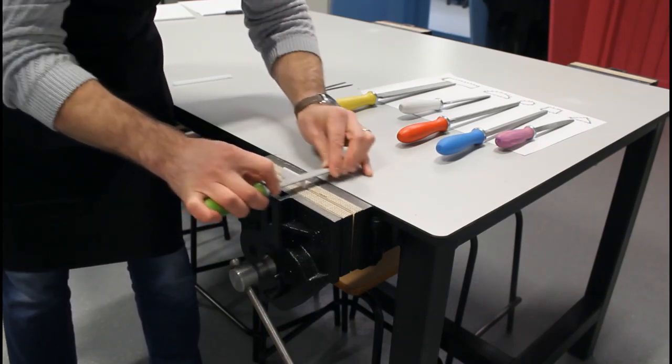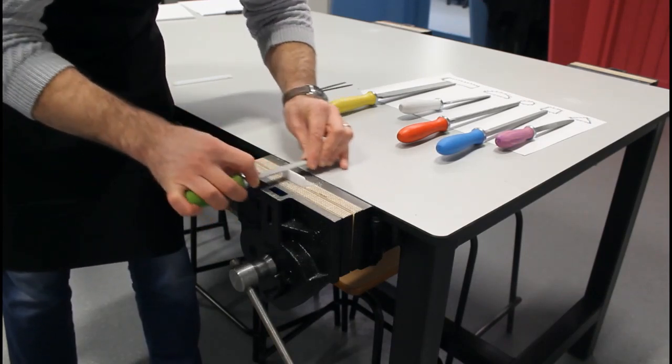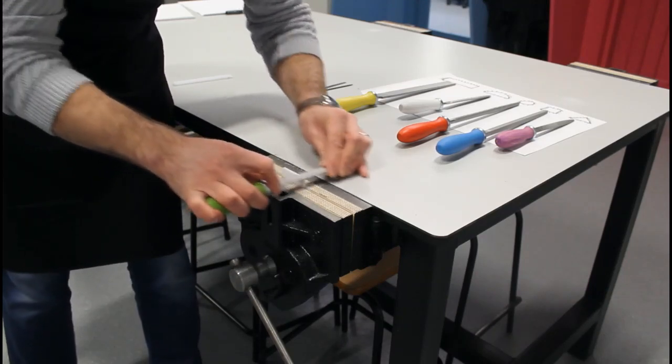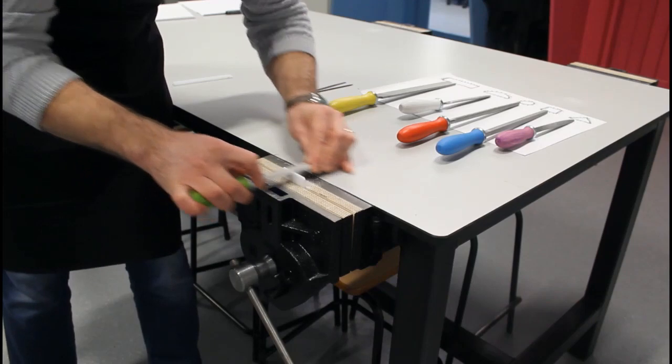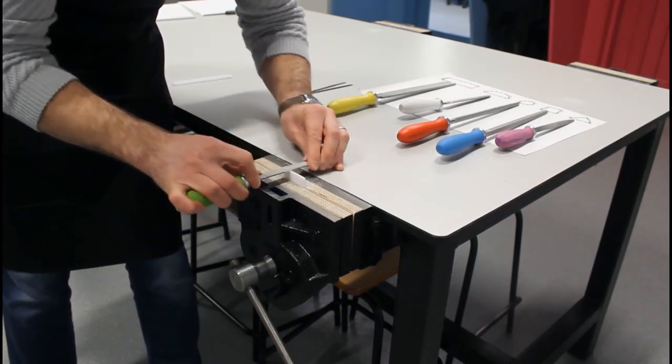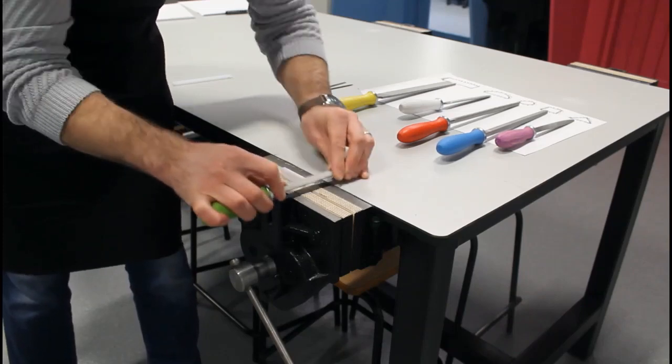And this won't really remove a lot of material, it will just bring it down to a smooth surface. And you have to give this a good draw filing to get a good result. This is draw filing.